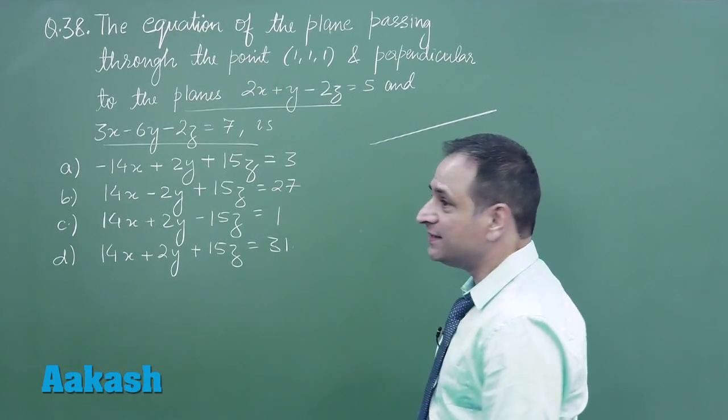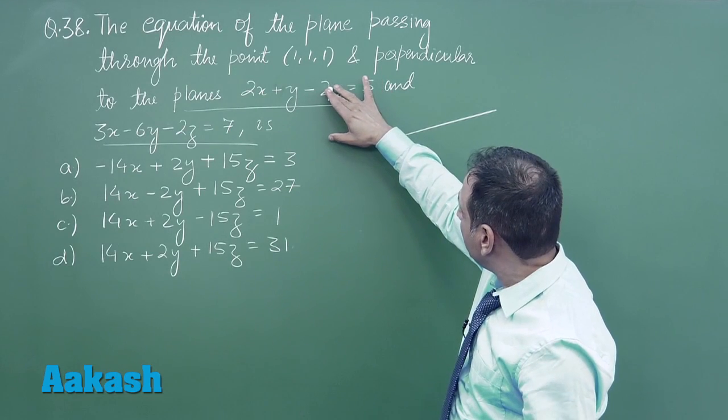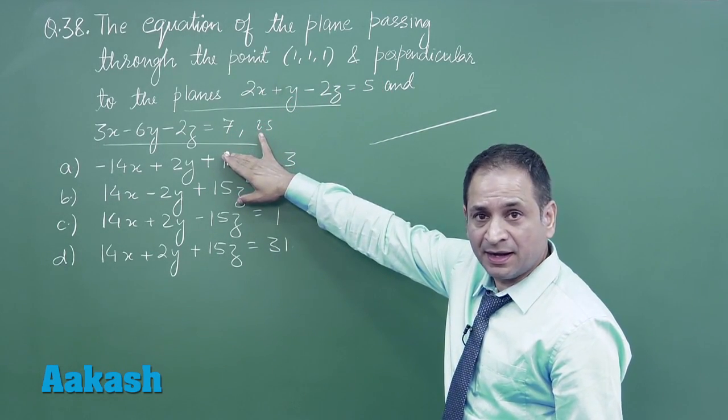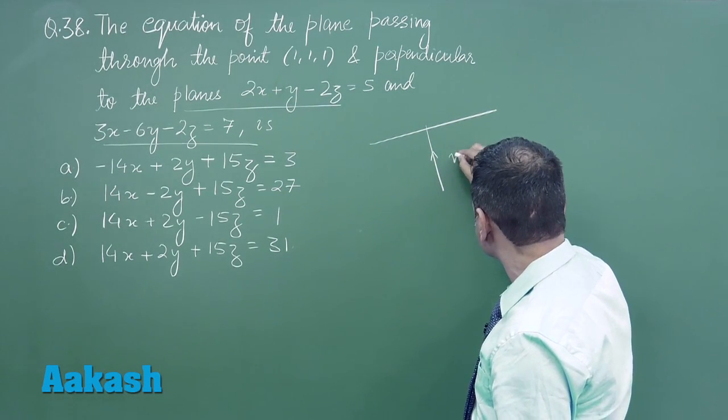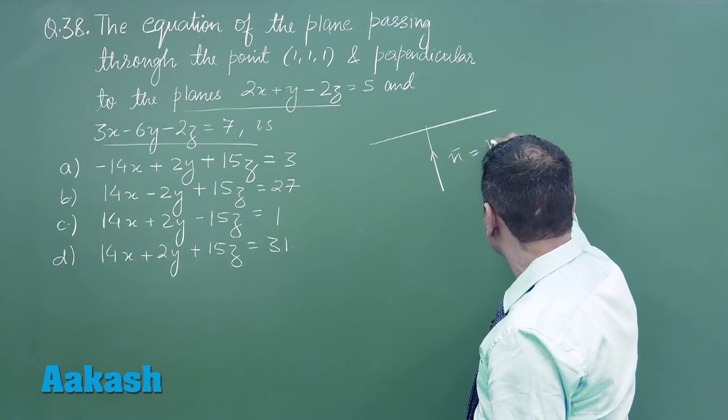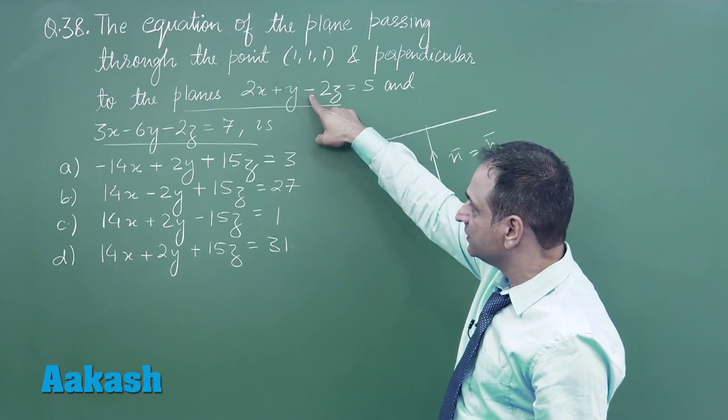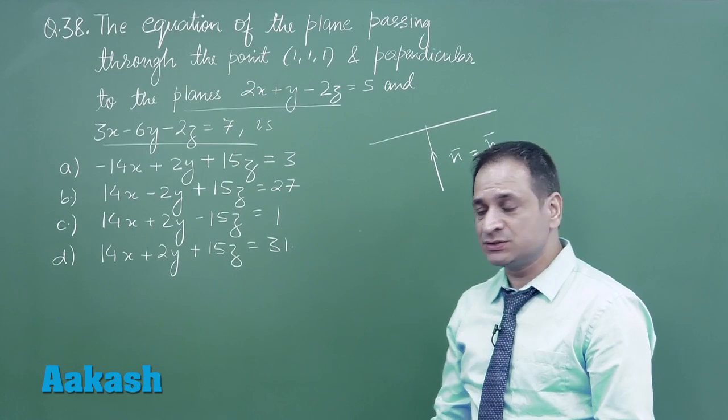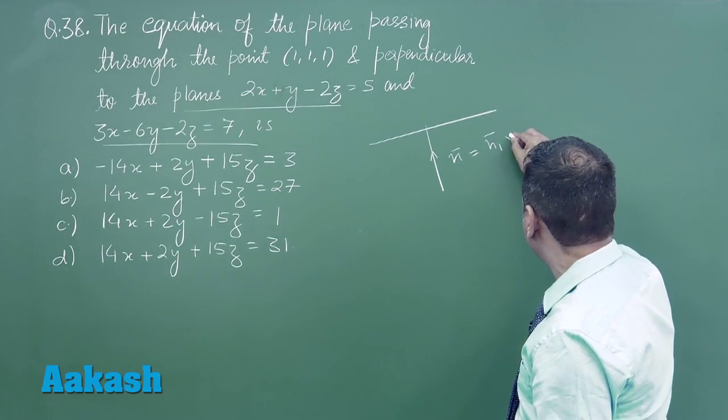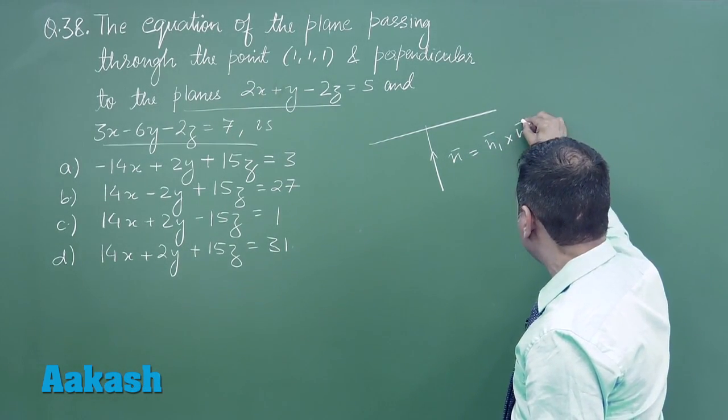The plane we have to find out is perpendicular, definitely. The normal vector is the cross product of these two given planes. The normal vector of these two given planes, so it is actually equal to n1 cross n2.